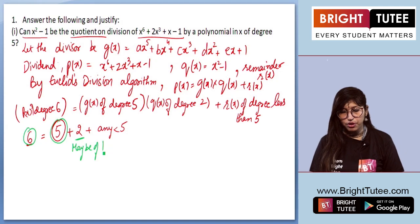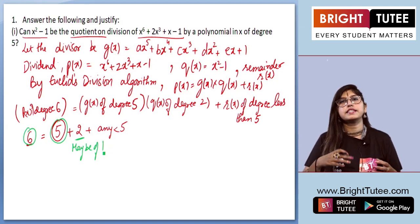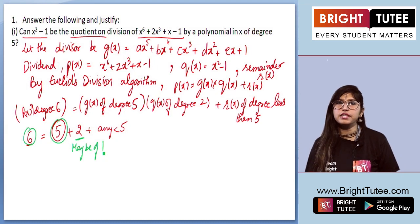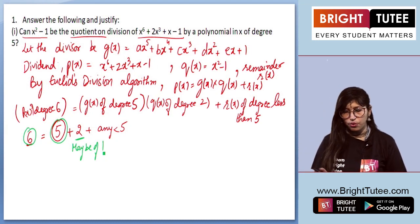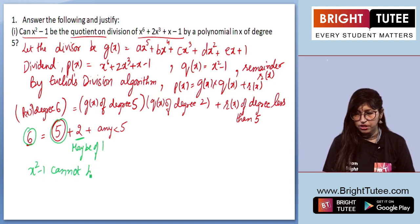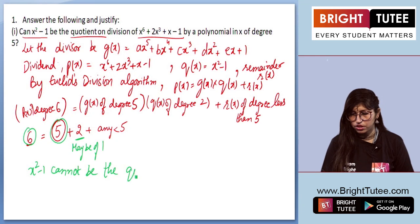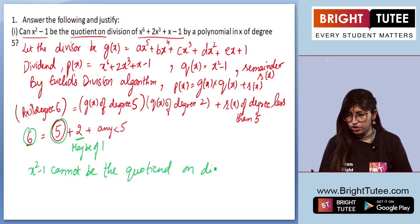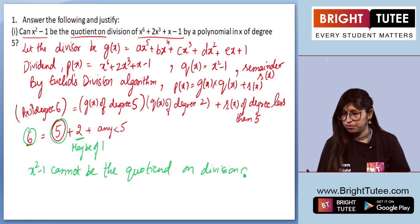Why? Because if there will be of degree 2, then we would have got something which is of degree 6 and more, which is not possible as we are equating both of them. So we can straight away say that x square minus 1 cannot be the quotient on division of P(x).